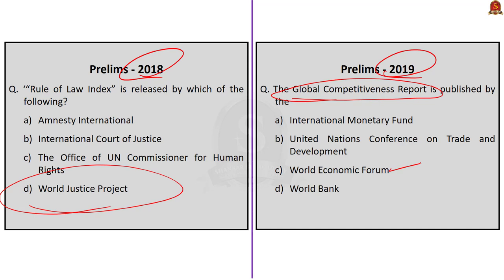In prelims you can expect a direct question; in mains you can use it as value addition. For example, in your mains answer you can write India's rank from a report in the introduction itself — it will differentiate your answer. If the question is about gender issues in India, you can start the answer by writing India's ranking in the Global Gender Gap Report. Such information will add important value, differentiate your answer, give credibility, and boost your score.